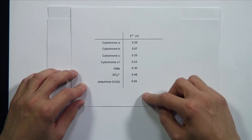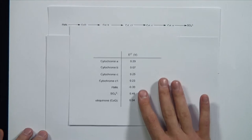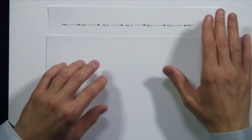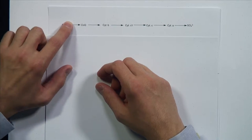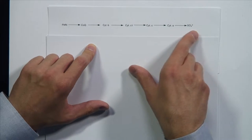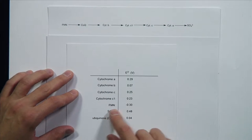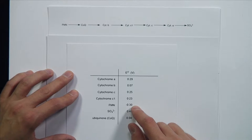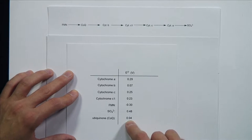The electron transport chain will go from the species that are hardest to be reduced towards those easiest to be reduced. Therefore, the order of the electron carriers will be from the ones that have the lowest reductive potential to those with the highest. Sorting all electron carriers in order of their potential, the electrons flow from flavin into coenzyme Q, then to cytochrome B, cytochrome C1, C, A, and finally sulfate. Flavin has a negative reduction potential — it's the hardest to reduce. Ubiquinone is barely positive, and the highest number is sulfate at 0.48 volts.